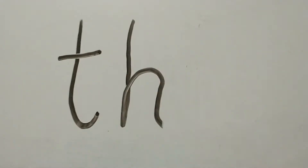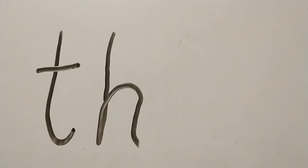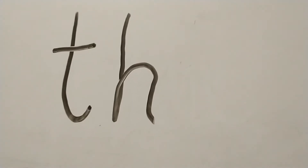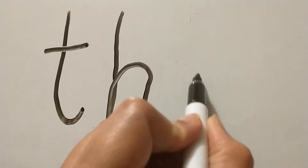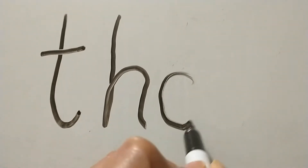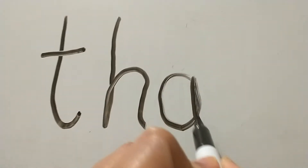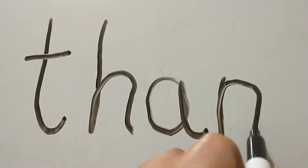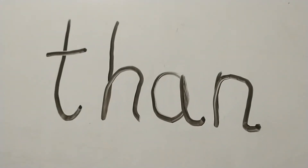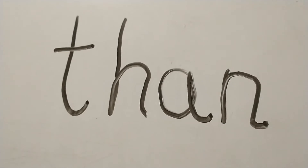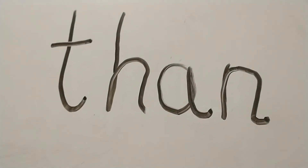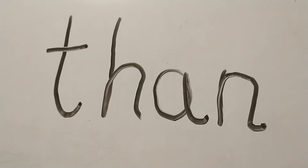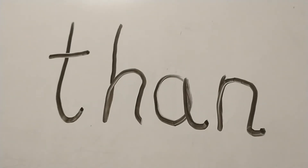The next one — we're going to replace the IS with an A and an N. TH-AN: THAN. TH-AN, THAN.